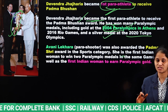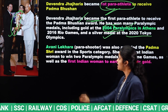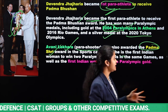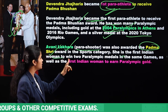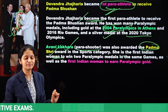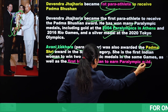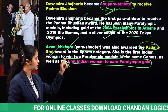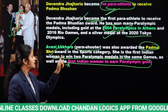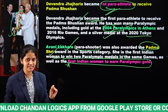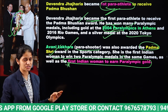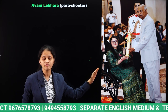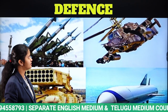Also under awards, para shooter Avani Lekhara was awarded the Padma Shri, one of the highest civilian awards. She is the first Indian woman to win two Paralympic medals in the same games, and also the first Indian woman to win a Paralympic gold medal. Avani Lekhara received the Padma Shri award from the hands of the President of India.